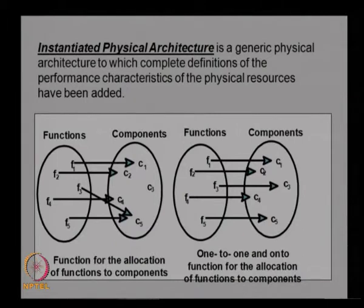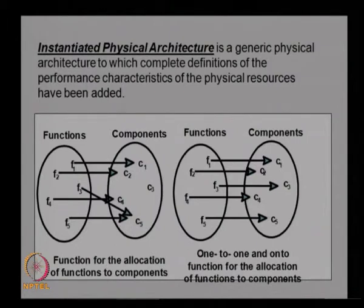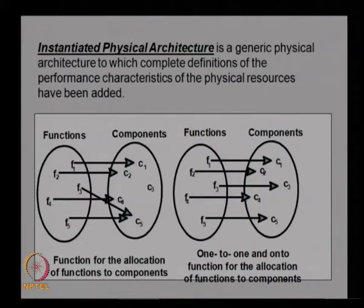Mapping is used to identify whether all functions are mapped to components, how components map to functions, whether there is a one-to-one or one-to-many mapping, whether some components satisfy multiple functions, or whether some functions have been left without any component. The instantiated architecture identifies the actual component names and specifications, replacing each generic element. Adding actual physical components to the generic physical architecture produces the instantiated physical architecture.